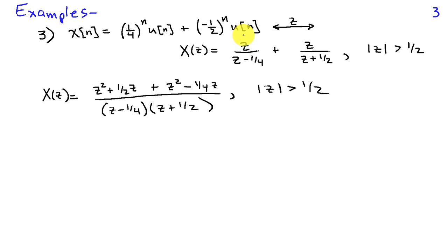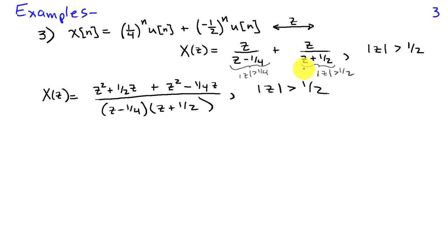For our third example, we take a sum of geometric series: one-fourth to the n times u of n, plus the quantity negative one-half to the n times u of n. We know that one-fourth to the n times u of n has Z-transform Z divided by Z minus one-fourth, valid for the magnitude of Z greater than one-fourth. The second term has Z-transform Z over Z plus one-half, valid for magnitude of Z greater than one-half. When we combine these two, the Z-transform has a region of convergence magnitude of Z greater than one-half. We can do algebra to combine these over a common denominator — keeping the denominator factored is more useful to us.